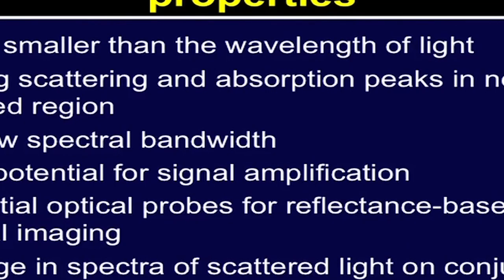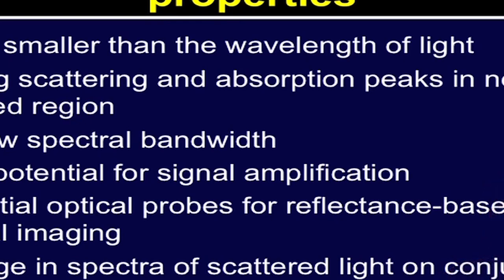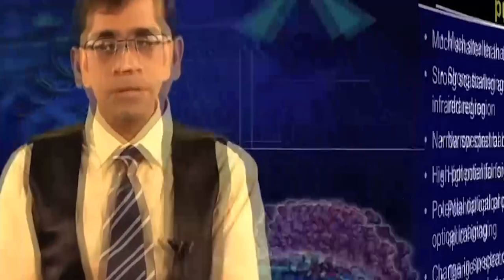Some properties of gold nanoparticles and nanocages: they are much smaller than the wavelength of light, offer strong scattering and absorption peaks in the near-infrared region, have very narrow spectral bandwidth, high potential for signal amplification, and can act as optical probes for reflectance-based optical imaging. They can be easily conjugated to antibodies or peptides, and changes in spectra of scattered light upon conjugation with biomolecules are observed. Gold nanocages can be conveniently functionalized with tumor-specific antibodies and serve as contrast agents for optical coherent tomography.